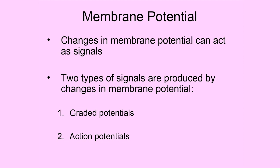There are a couple of different types of change in membrane potential that we see with nerve cells. Drawing a simplified neuron — with an axon, terminal branches, synaptic knobs, cell body or soma, and dendrites — the two types of changes are known as graded potentials and action potentials.